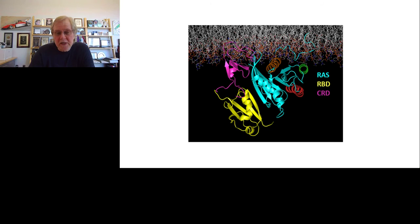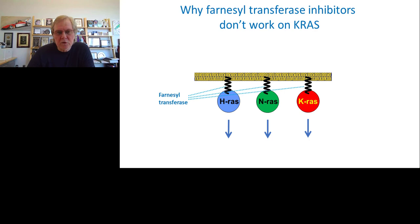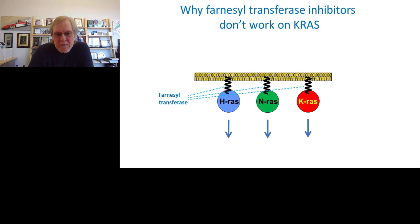Some of the first attempts to target RAS, way back in the 1980s, focused on preventing RAS proteins from localizing to the plasma membrane by blocking the process of farnesylation. This cartoon shows three RAS proteins — H, N, and K — all localized in the plasma membrane through a C-terminal tail, the farnesol group, which is the lipid tail that locks RAS proteins into the membrane. It was recognized in the 80s that the addition of this tail is mediated by an enzyme called farnesyltransferase, and efforts were made to inhibit farnesyltransferase with drugs.